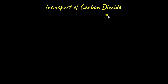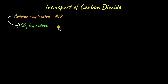In a previous video we talked about the transport of oxygen throughout the body. In this video we are going to talk about the transport of carbon dioxide within the body. Carbon dioxide is produced as a byproduct of cellular respiration — when ATP is being produced using oxygen, carbon dioxide is produced as a byproduct.